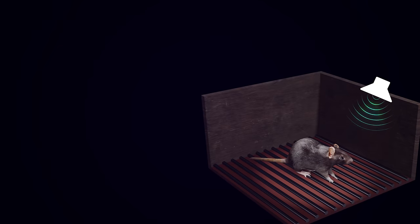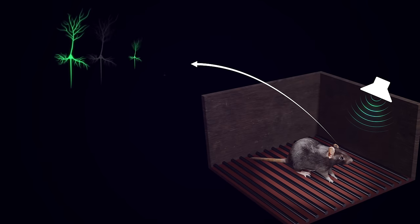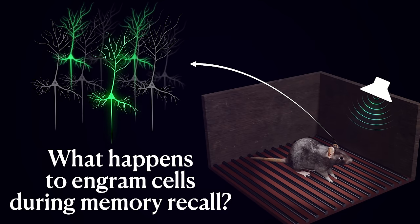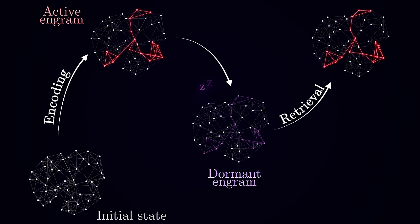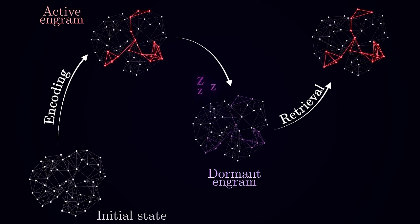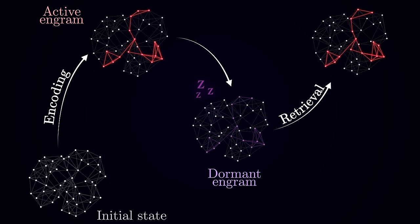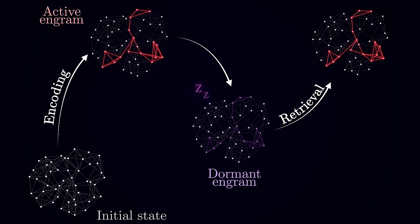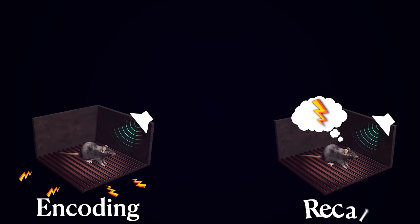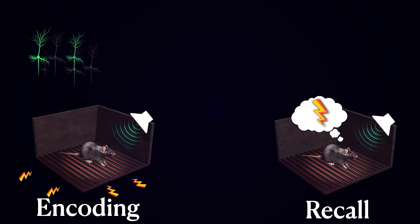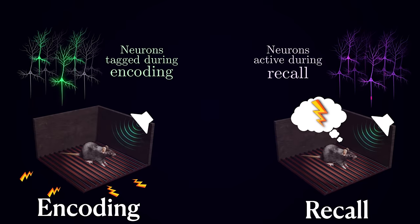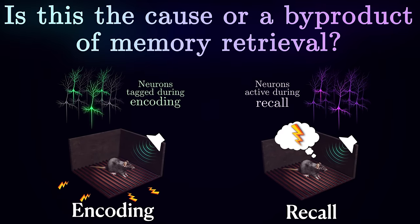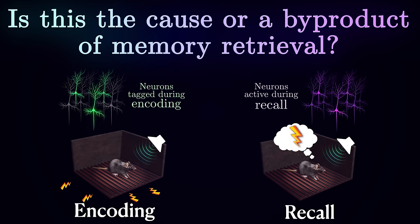One of the first things that is compelling to test is what happens to these engram neurons during memory recall. Remember that according to Semon's visionary definition, engram can be reactivated by stimuli similar to the original experience. Indeed, during the recall of this memory on the test day, the same pool of engram cells become activated.